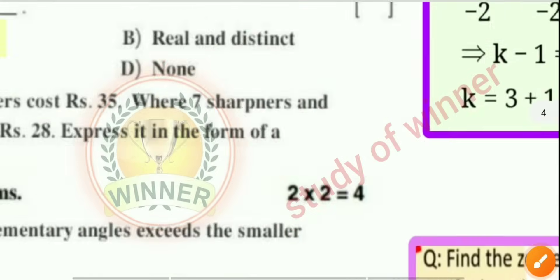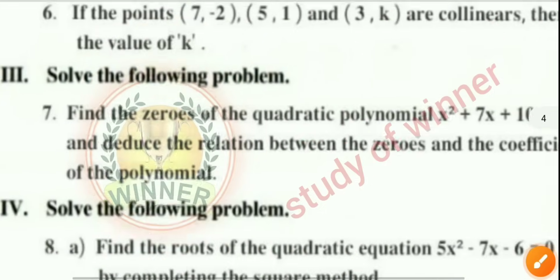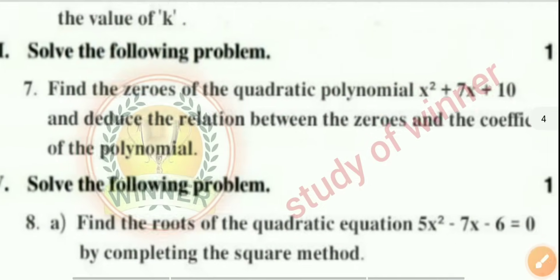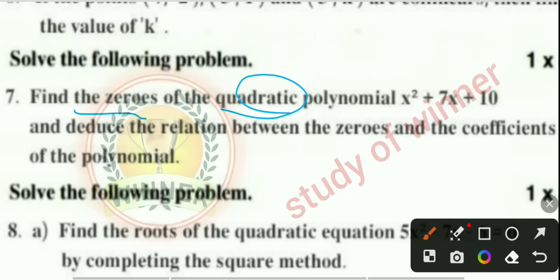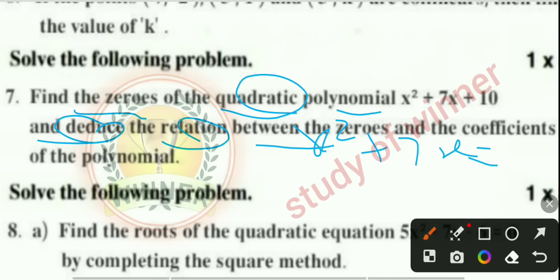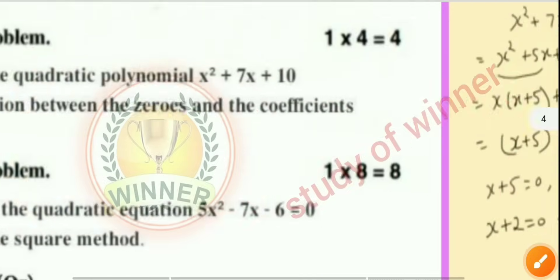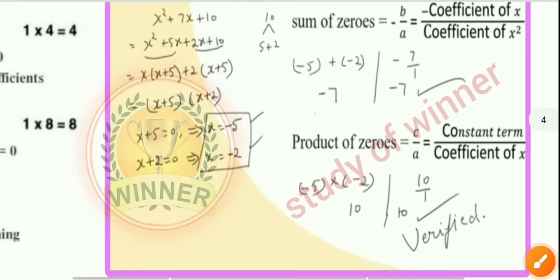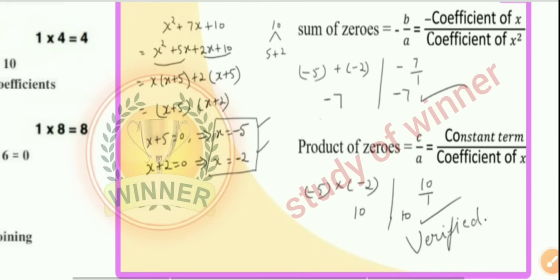Question 7: find the zeros of the quadratic polynomial x² + 7x + 10 and deduce the relation between the zeros and the coefficients of the polynomial.